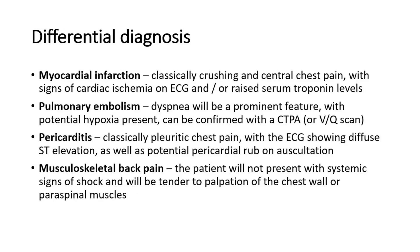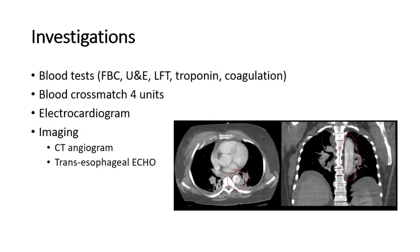A thoracic aortic dissection will often present as chest pain, a presenting problem that has multiple differential diagnoses. Myocardial infarction classically presents as crushing central chest pain, with ischemia on ECG and raised serum troponin levels. Pulmonary embolism, where dyspnea will be a prominent feature with potential hypoxia, can be confirmed with a CTPA or VQ scan. Pericarditis classically presents as pleuritic chest pain, with the ECG showing diffuse ST elevation and a potential pericardial rub on auscultation. Musculoskeletal back pain, where the patient will not present with systemic signs of shock and will be tender to palpation of the chest wall or paraspinal muscles.